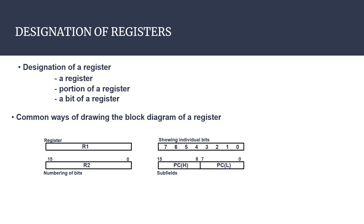If we want to indicate individual bits of a particular register — for example, an 8-bit register — we start from the right-hand side and numbering begins from 0. So for an 8-bit register, bits are numbered 0 to 7. For a 16-bit register, bits go from 0 to 15. We always number bits from right to left, so the highest bit is at the left and the lowest bit is at the right.